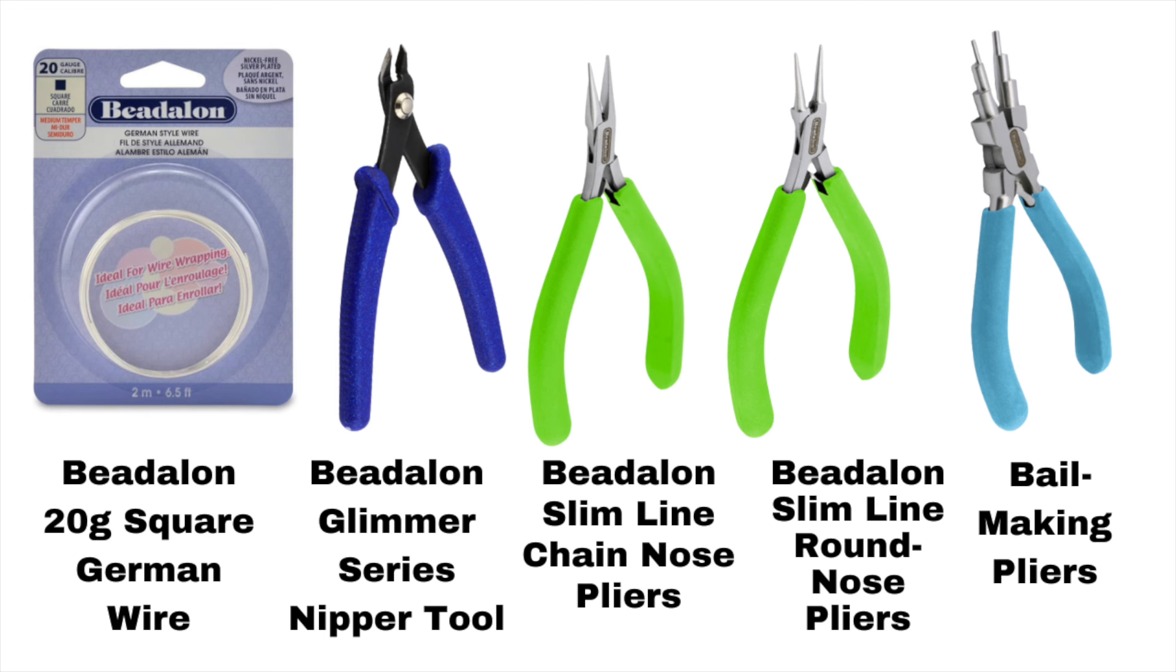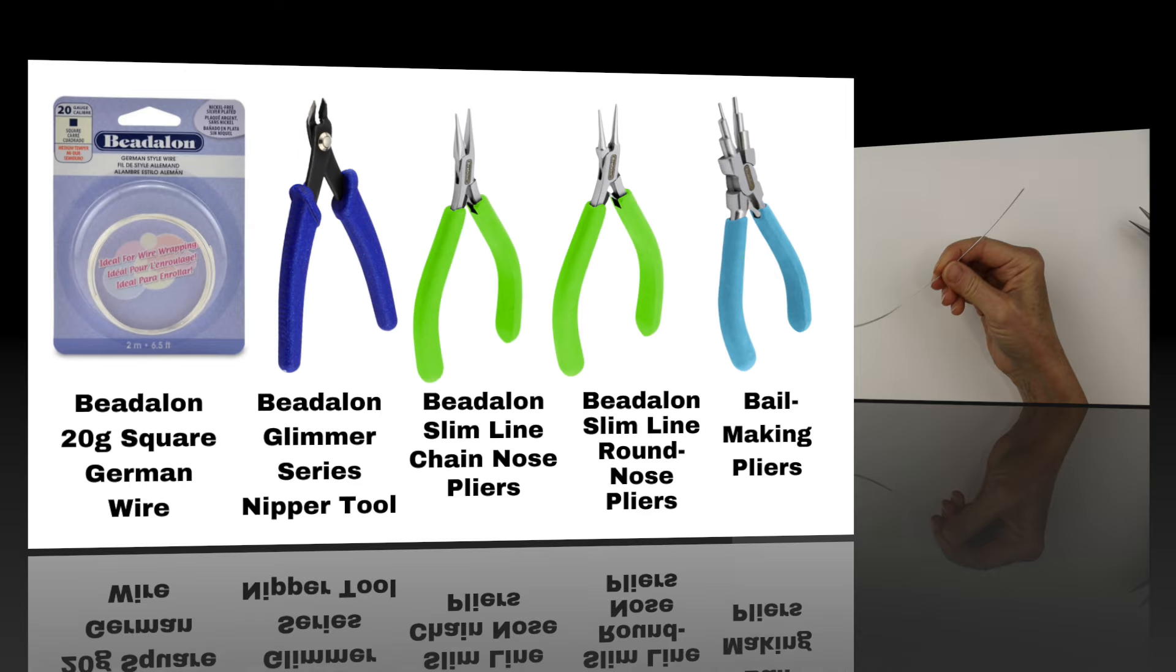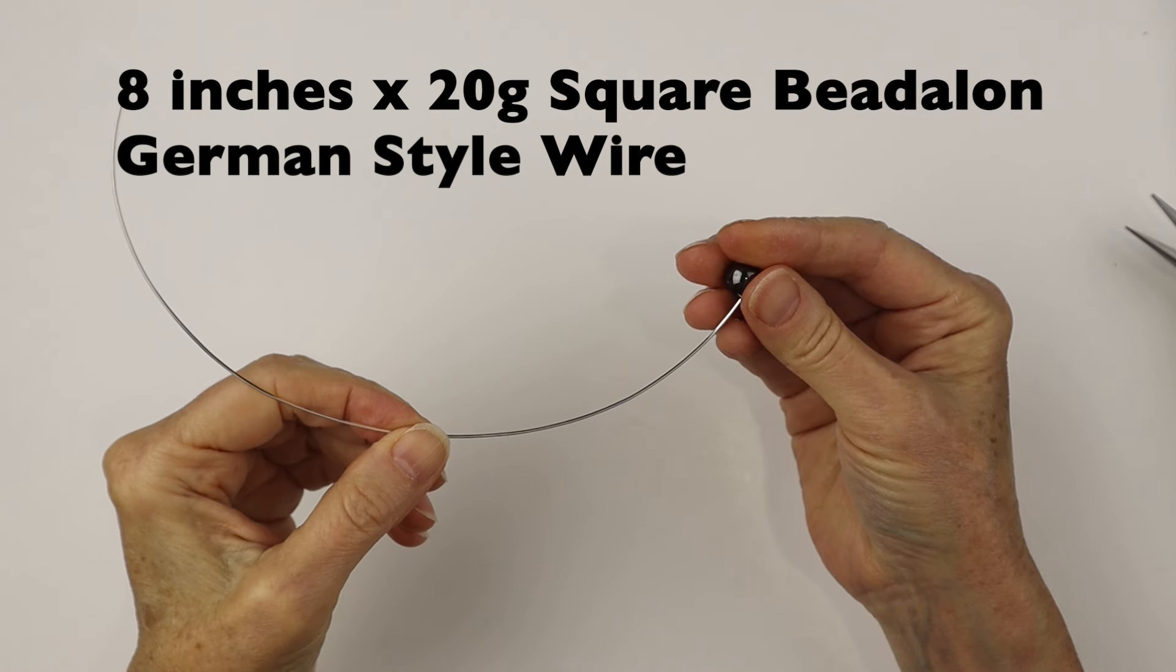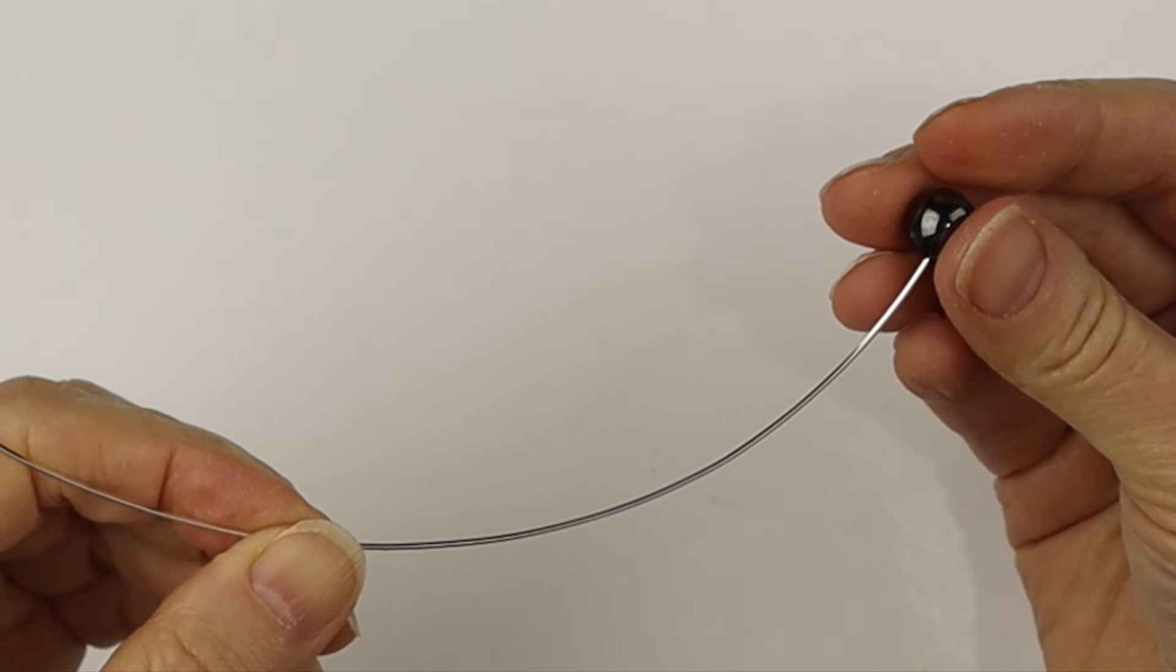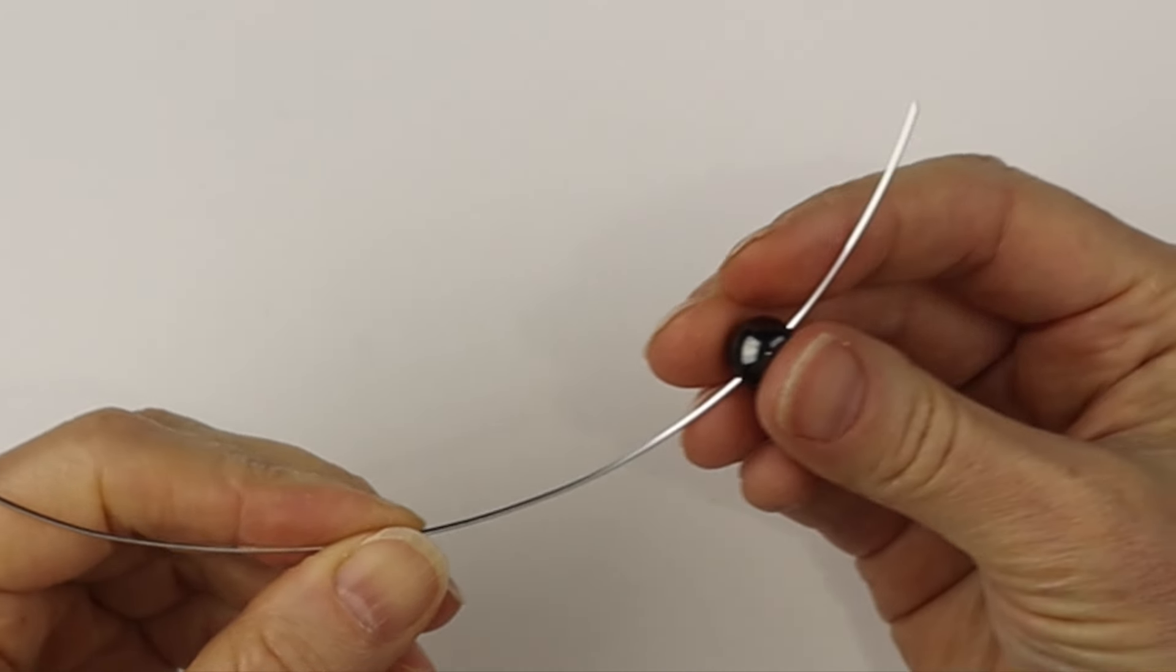The nipper tool, the slimline chain nose pliers, the slimline round nose pliers, and the new bail making pliers from Beadalon. We are going to start with about 8 inches of 20 gauge square Beadalon German style wire.